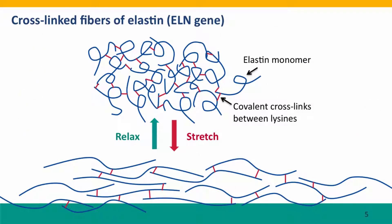Here is a schematic diagram of cross-linked fibers of elastin. You can think of the elastin monomers as being folded up into complex tangles, and these tangles are held together. The monomers of elastin are held together by cross-linking bonds, shown here in red. These are covalent bonds that form between different elastin monomers, called cross-links because they link across from one monomer to the next. They occur at a number of different places in the protein because elastin contains a relatively high proportion of the amino acid lysine, and the lysines are capable of forming these cross-links.